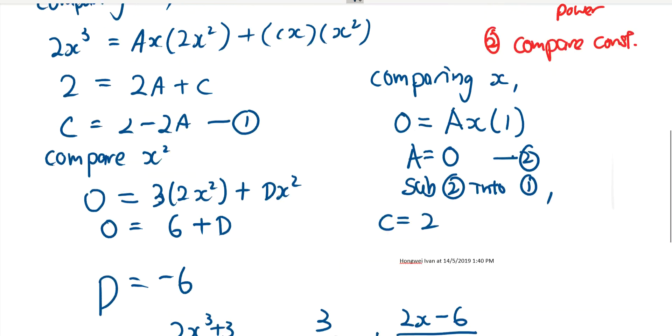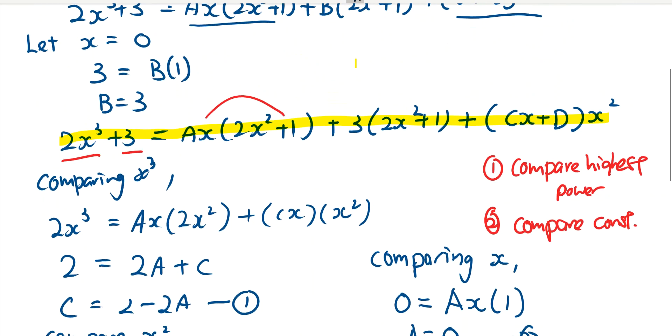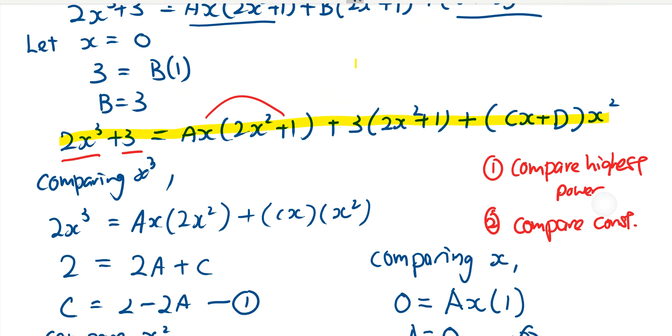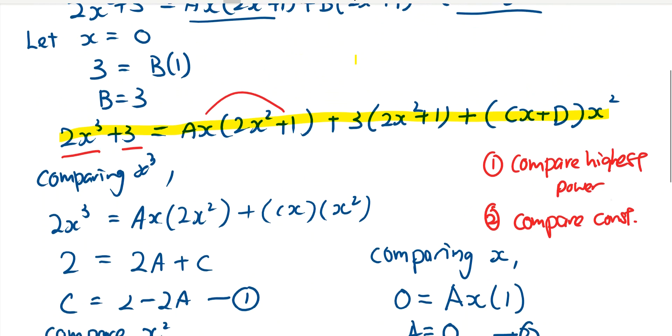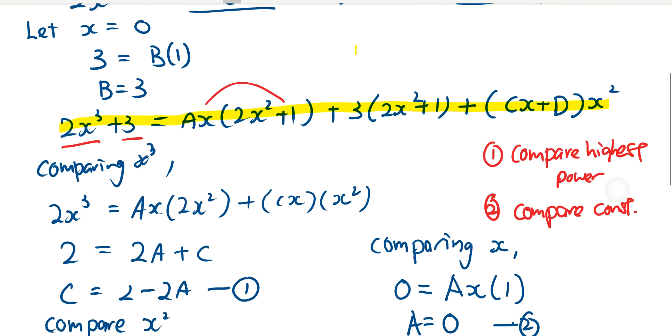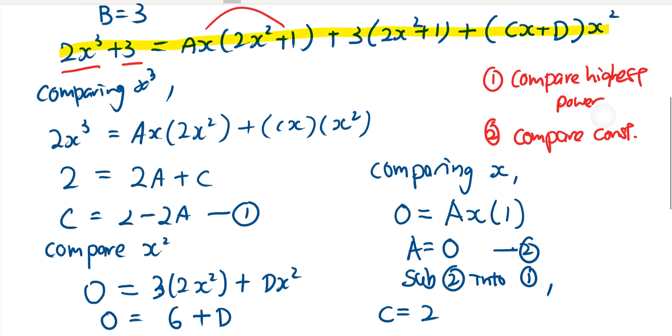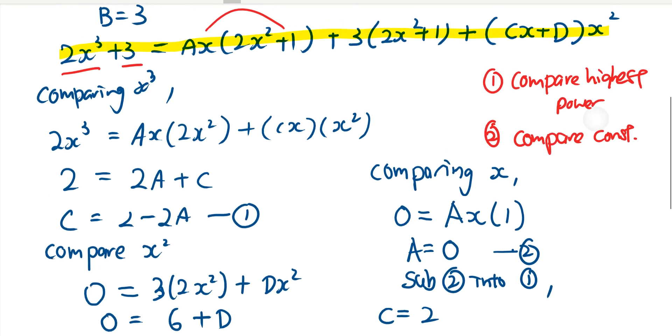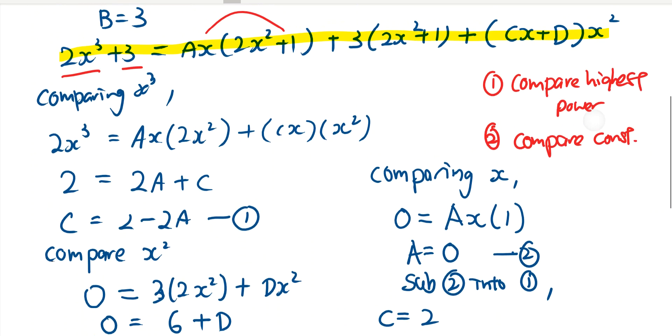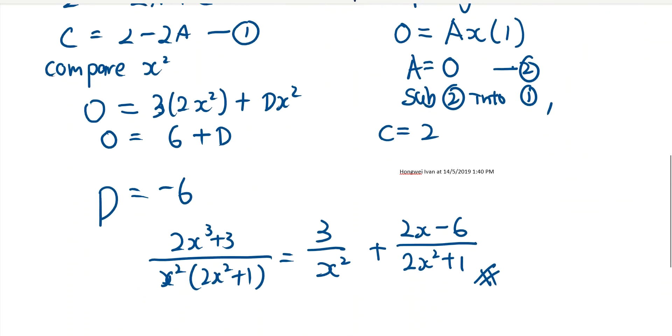So important thing to note is, at the start, when we can let x be something, we let x equal to 0 so that we can eliminate the other variables to find one variable first. Then after that, using your comparison method to find the other constants, the other unknowns. Another method would be you can expand the whole of your right side, and if you think that it's easier for you, then go and compare - it will give you the same answer.